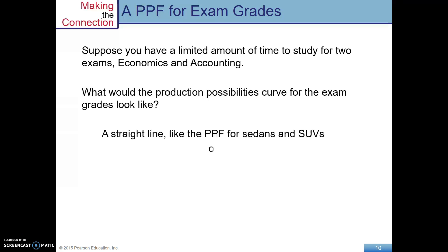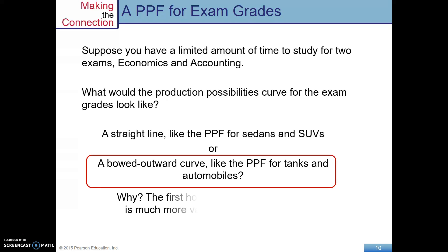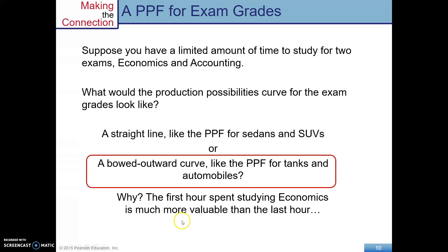Imagine you have a limited amount of time to study for two exams — economics and accounting. Would the PPF be a straight line with constant opportunity costs, or a bowed outward curve like we saw with tanks and automobiles? It's going to be bowed outward, because the first hour spent studying economics is much more valuable than the last hour — increasing opportunity costs. The more resources already devoted to an activity, the smaller the gain from devoting additional resources. By the time you've studied 10 hours for economics, adding another hour won't help much — it would be more valuable to spend time studying accounting instead.